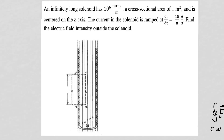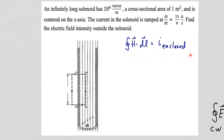Because the solenoid is infinitely long, the magnetic flux density field inside the solenoid will never come out, so it can't loop around and come back the other way. So the magnetic flux density field outside the solenoid will be zero. So let's first apply Ampere's circuital law, which tells us the integral of H dot dl around a closed path is equal to the current enclosed by that path.